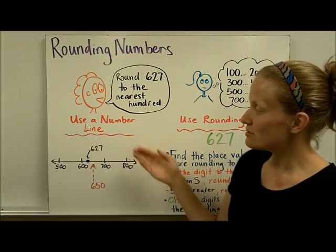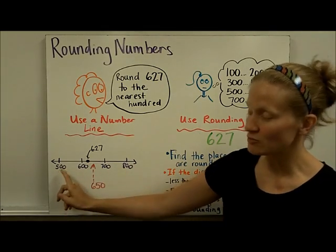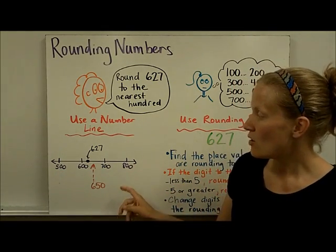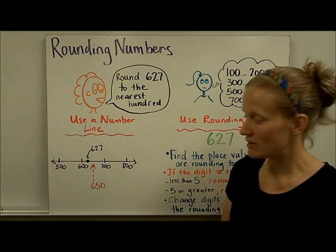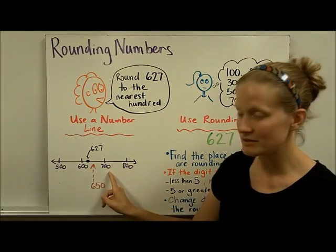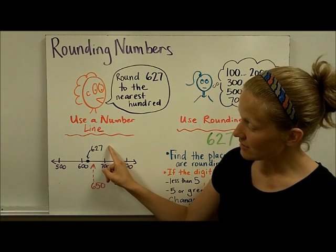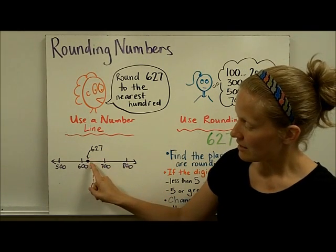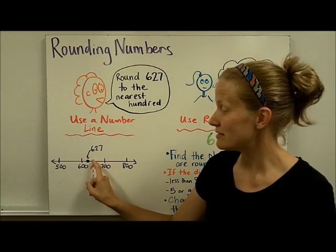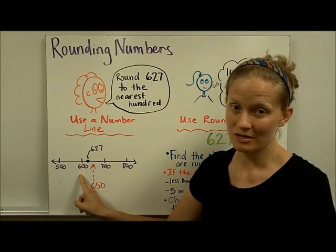If we used a number line and put our hundreds — each multiple of 100: 500, 600, 700, 800 — we could think about placing 627. It's helpful to think about what's between 600 and 700, which is 650, and 627 is less than that. So once you place it on the number line, you can see that 627 is closer to 600, so it would round to 600.